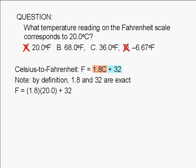Plugging in the numbers, the Fahrenheit reading equals 1.8 times 20.0 plus 32. The product of 1.8 and 20.0 is 36.0. This has three significant digits because 20.0 has three significant digits, and 1.8 is exact.